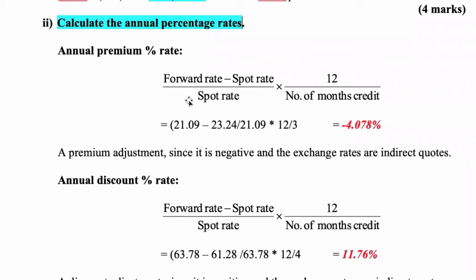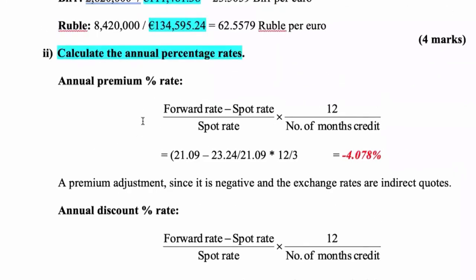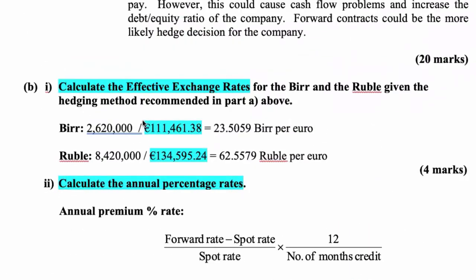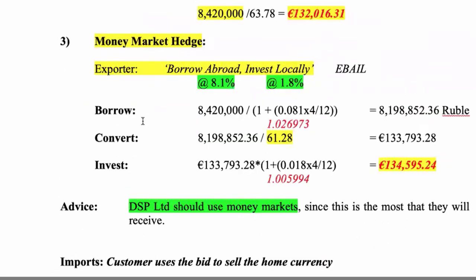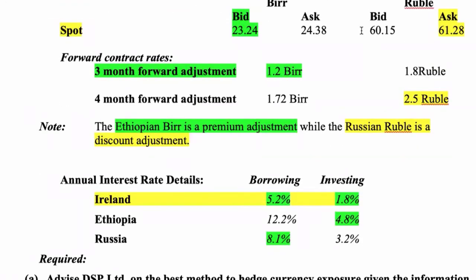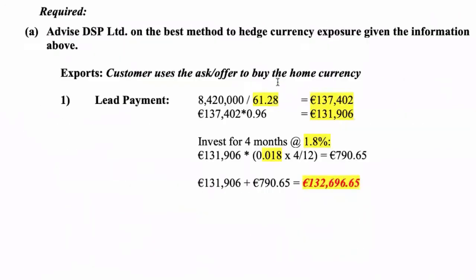On the premium rate — and the reason why I have it here as premium and discount — we note with the premium we were dealing with the Ethiopian Birr. We're talking about a rate of 23.24 and we made the adjustment of 1.2. If you recall, it was a premium adjustment, so we subtracted that from here, so this is your spot and your forward will be 23.24 minus 1.2.